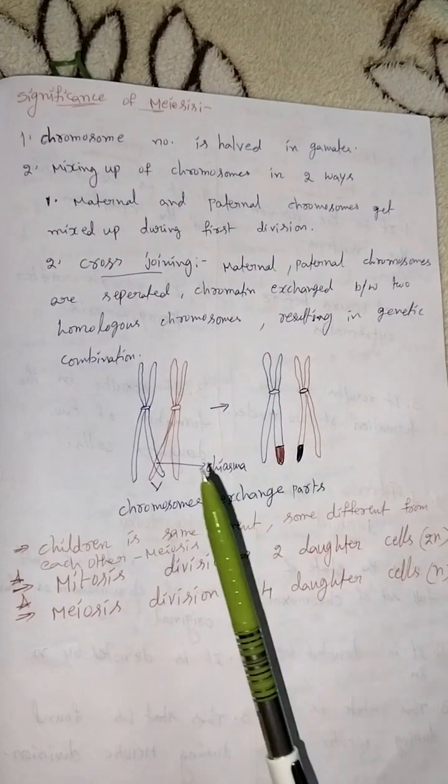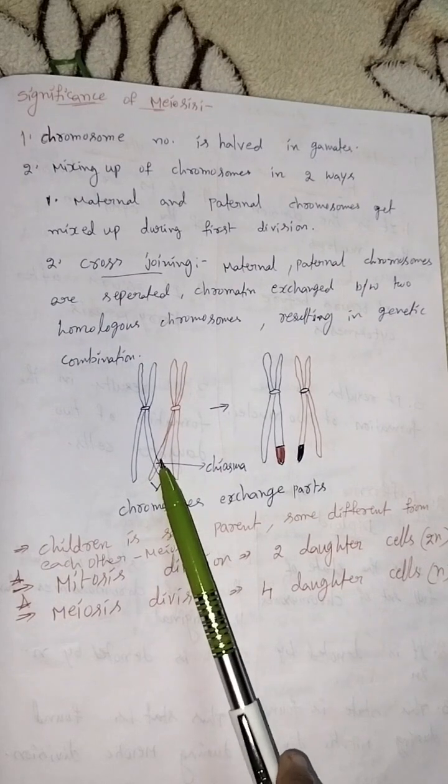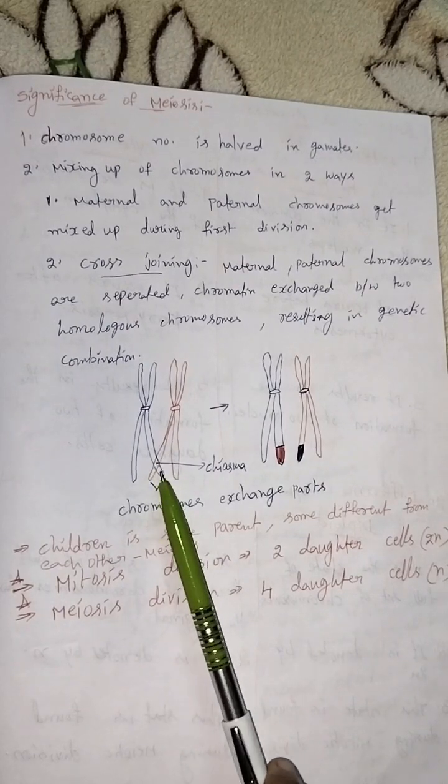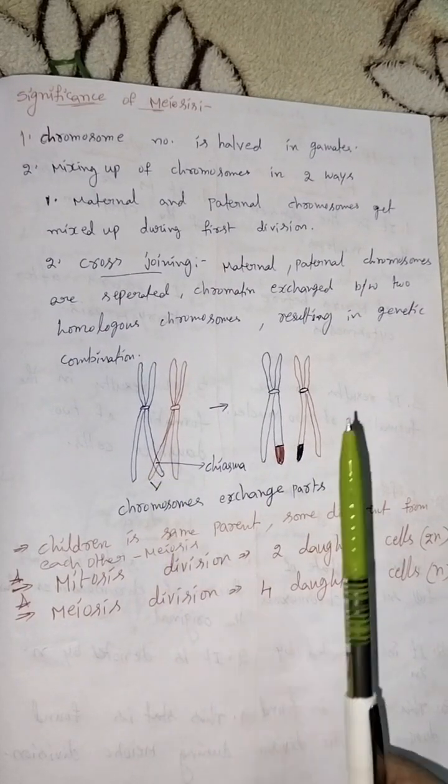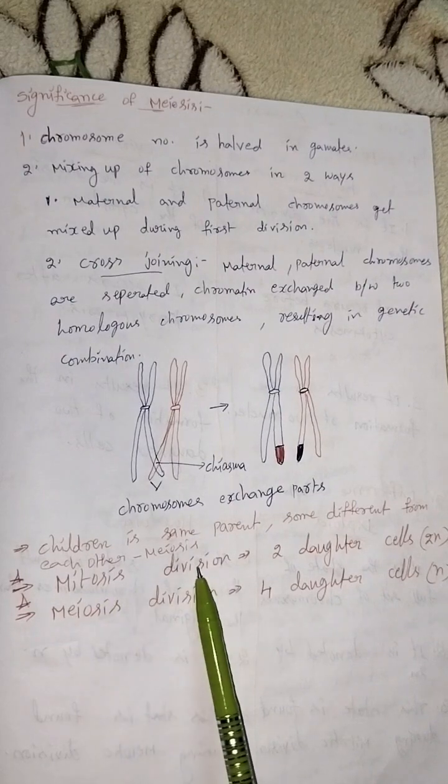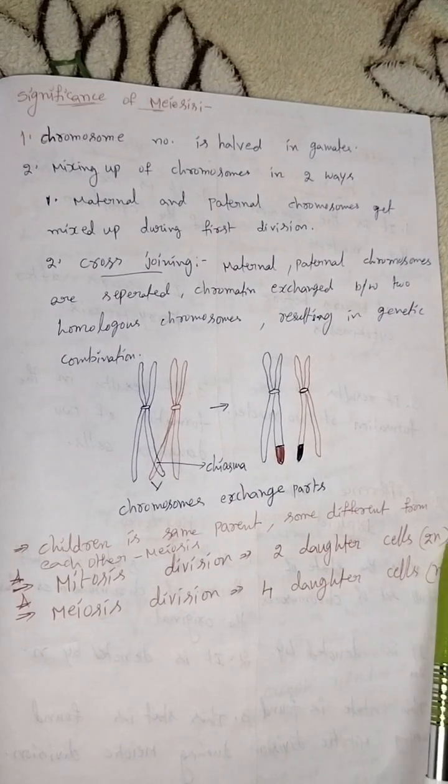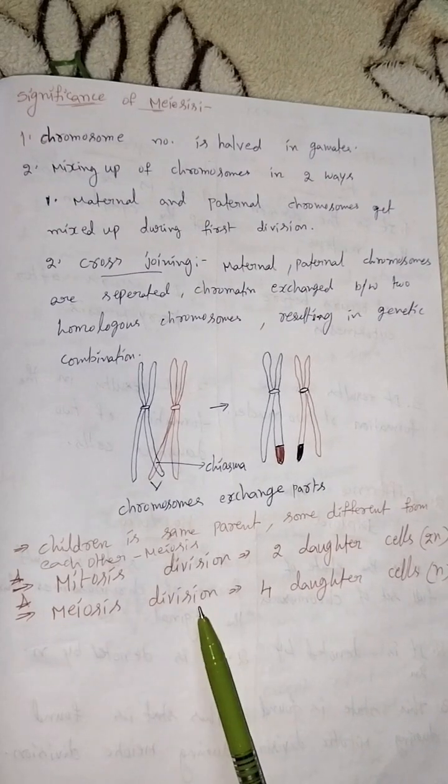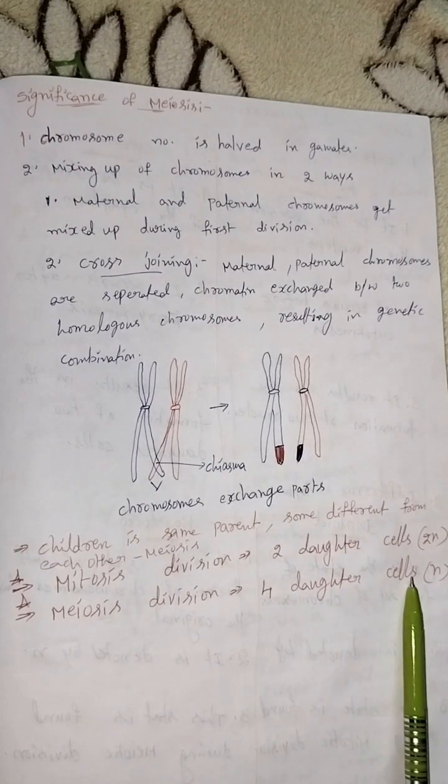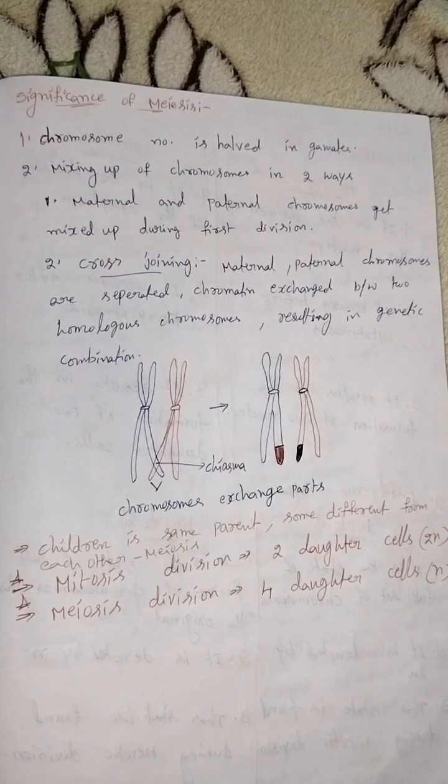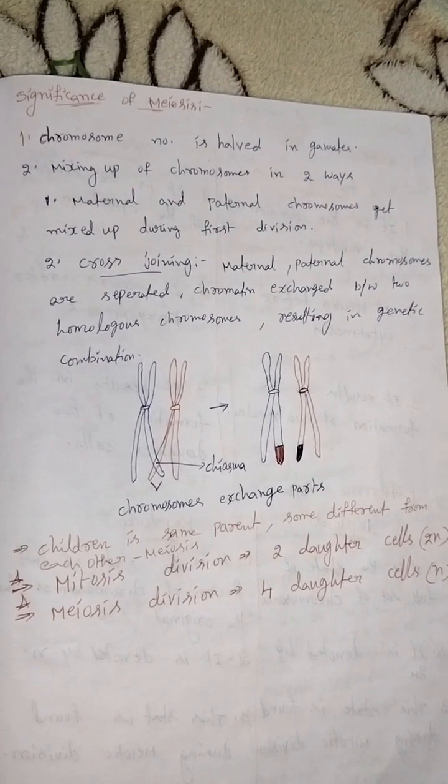The chromosomes are exchanged in this way, so children from the same parent are different from each other because of meiosis. The chromosomes are exchanged from maternal and paternal chromosomes. Mitosis division produces two daughter cells denoted by 2N. In meiosis division, four daughter cells are formed, denoted by N. Thank you everyone, please subscribe to my channel.